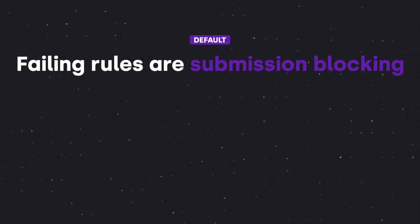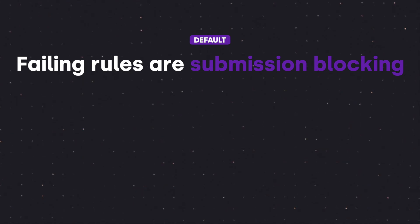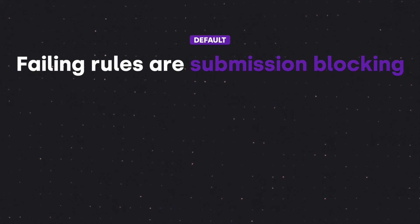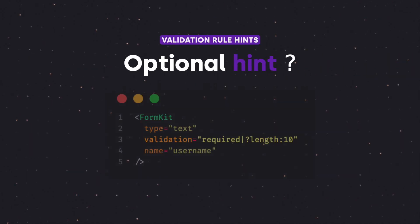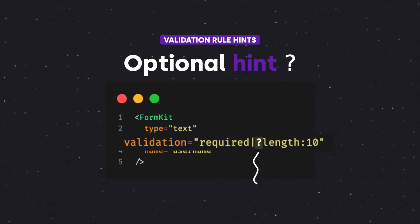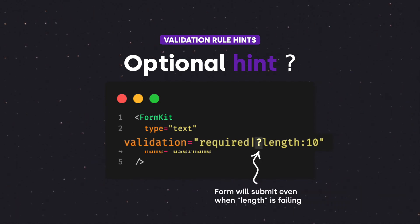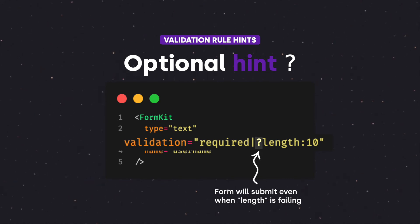Lastly, by default, validation rules are submission blocking. When a validation rule is failing, it produces a blocking message that prevents form submission. We can make a validation rule non-blocking by using the optional hint marked by a question mark. The optional hint allows a form to be submitted even if the rule is failing, like if your application recommends a stronger password but will still allow the user to set a weak one.